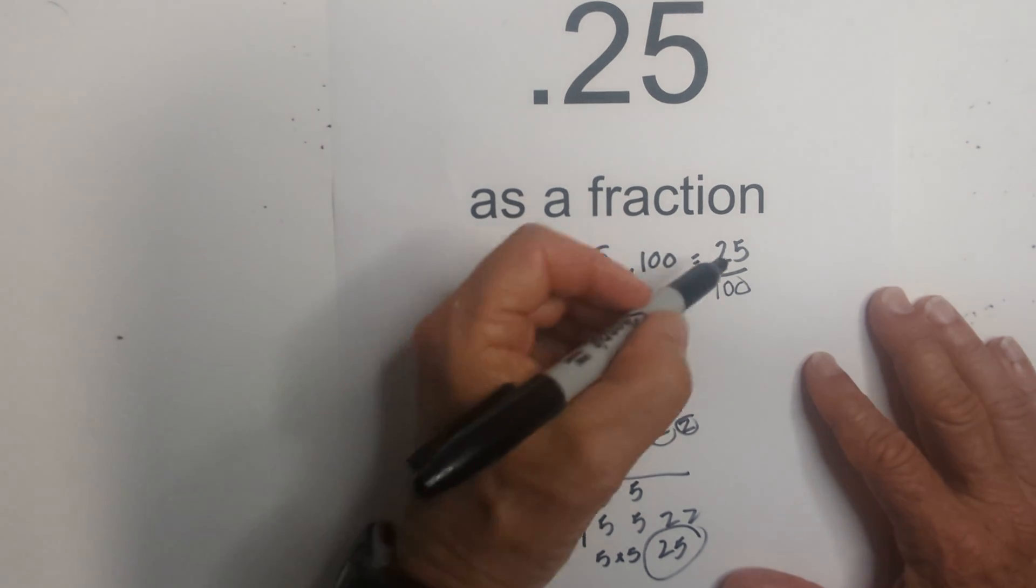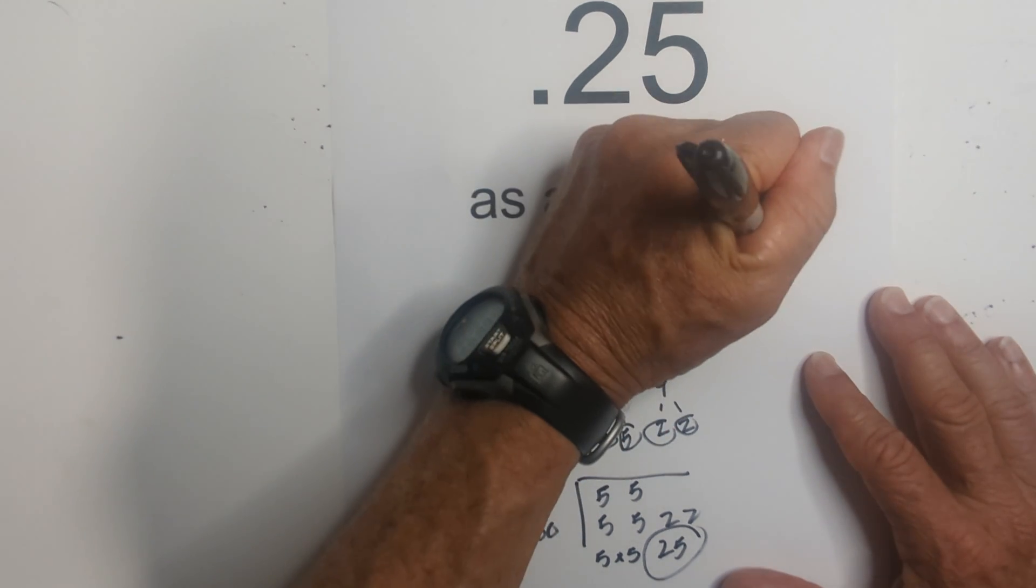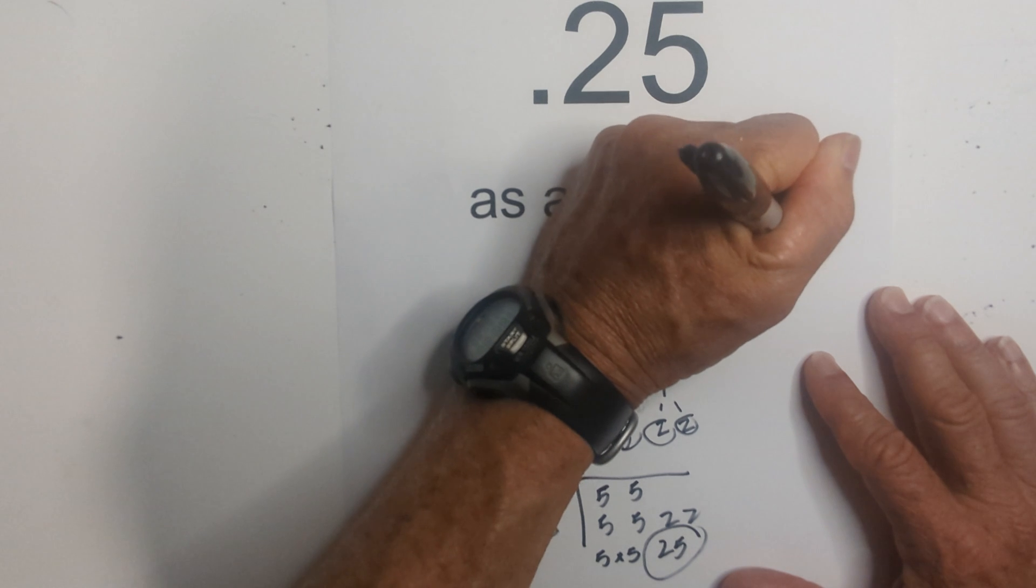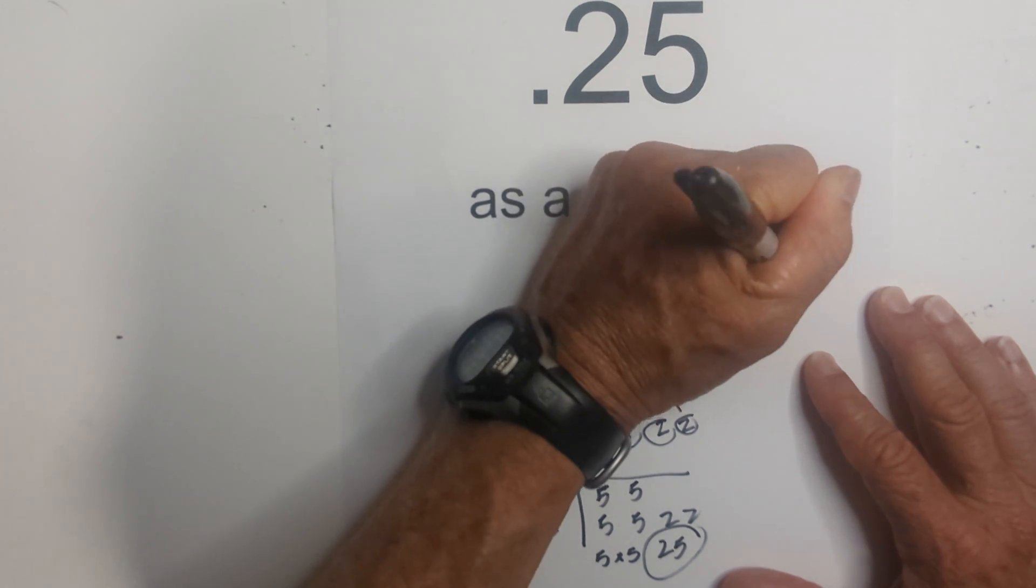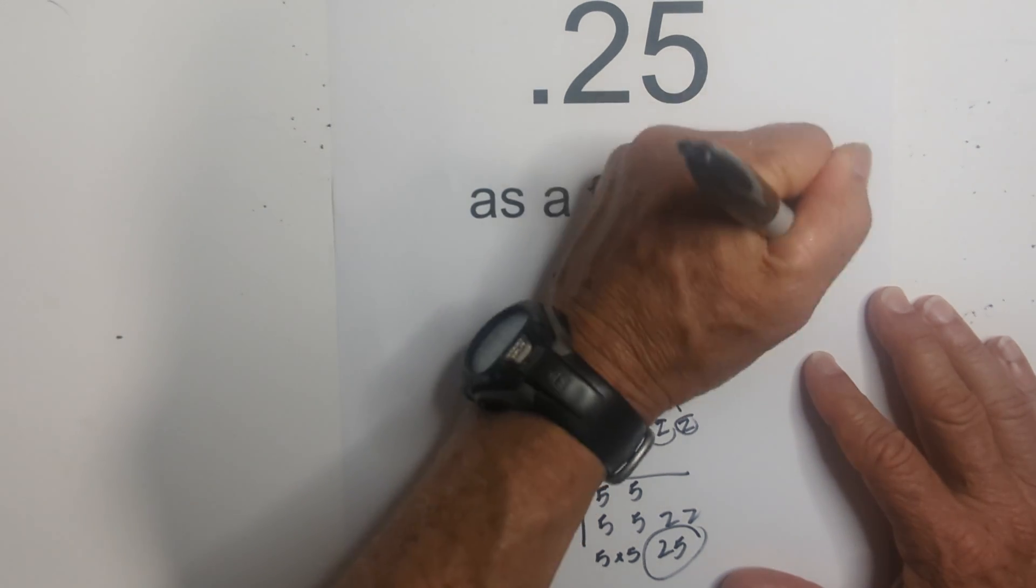So let's go back to this. So we know the greatest common factor is 25. I just take 25 divided by 25, and 100 divided by 25.